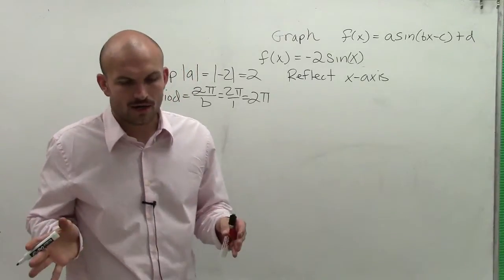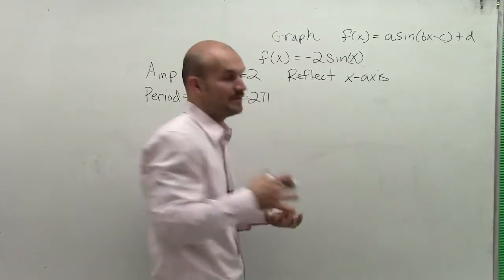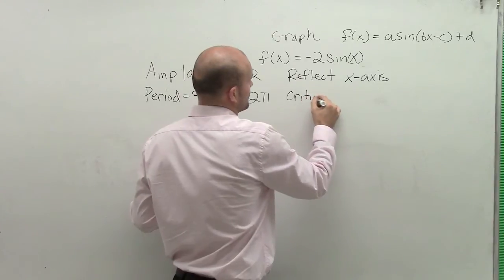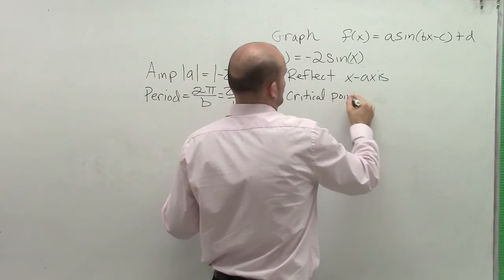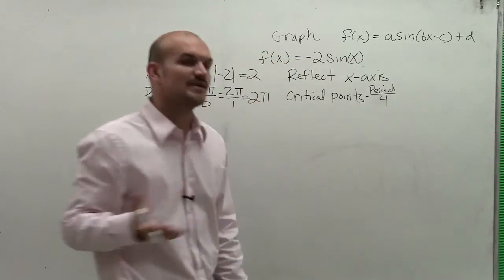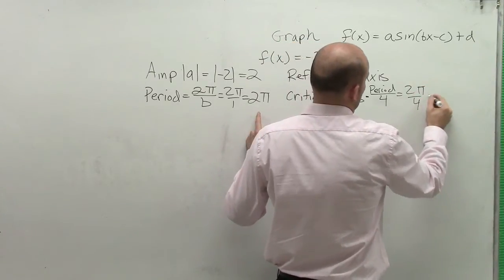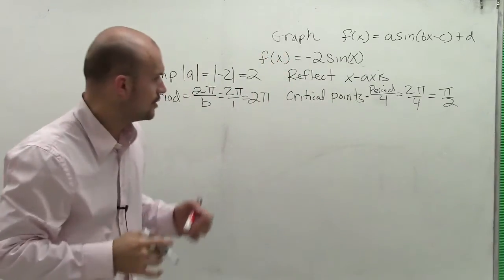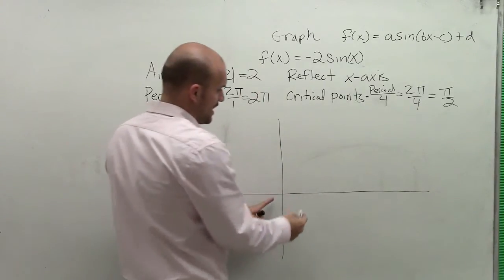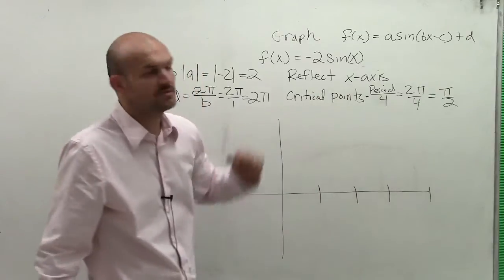So then let's go ahead and take a look at our critical points. We look at our period, and once you determine your period, when you want to find the critical points, remember the critical points were like your maximum, your minimum, your x-intercepts. So what you do to find your critical points is you take your period and you divide it by 4, because there's technically four important critical points we're looking at within one period. So my period in this case is 2π divided by 4, which means π/2.